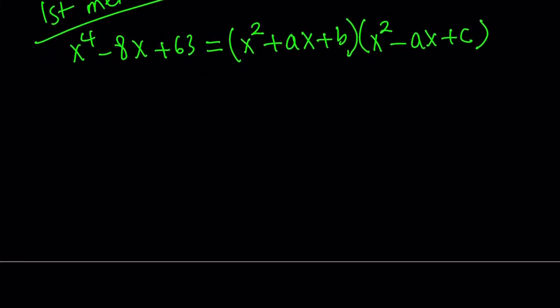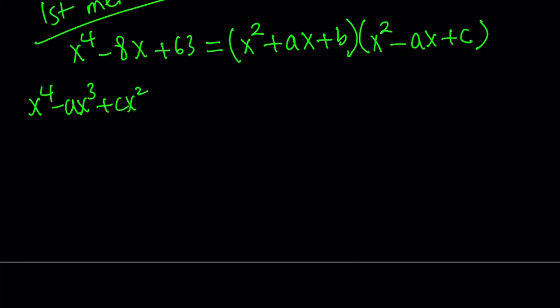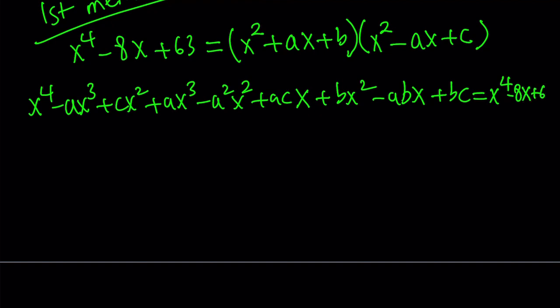Let's go ahead and distribute the right hand side and set it equal to the left hand side. So we get x to the fourth power minus ax cubed plus cx squared plus ax cubed minus a squared x squared plus acx plus bx squared minus abx plus bc is equal to x to the fourth minus 8x plus 63.